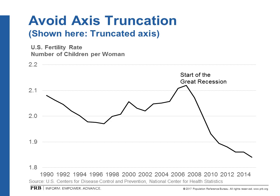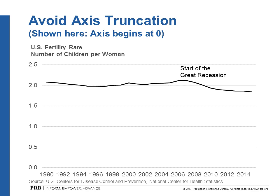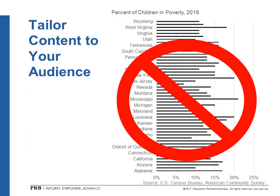Another thing we want to make sure we don't do is truncate the axis. Here is the total fertility rate of U.S. women from 1990 to the present. You can see what looks like a really dramatic drop starting around 2008 when the recession started. But if you pay careful attention, the left-hand axis starts at 1.8 rather than zero. If we start at zero instead, it tells a much different story — yes, the total fertility rate has fallen, but the drop is clearly not as dramatic as the prior chart showed. So be very careful about starting your axis at zero. In very unique circumstances there may be a compelling reason to start at a different value, but generally speaking, start at zero.